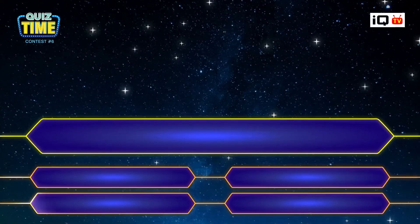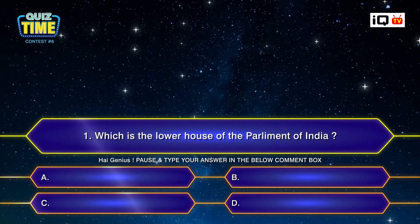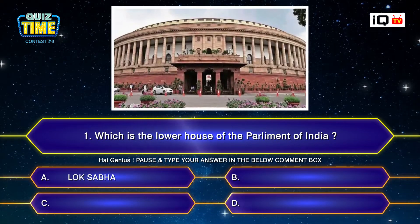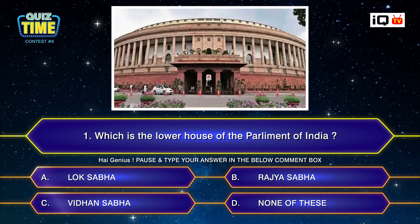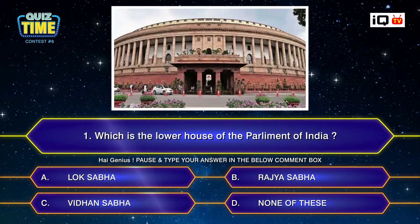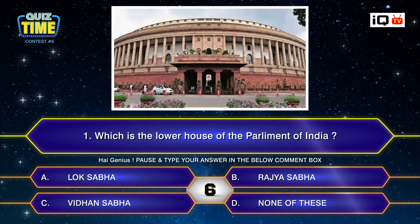Number one: Which is the lower house of the parliament of India? A. Lok Sabha, B. Rajya Sabha, C. Vidhan Sabha, D. None of these. Your time starts now. Type your answer down.